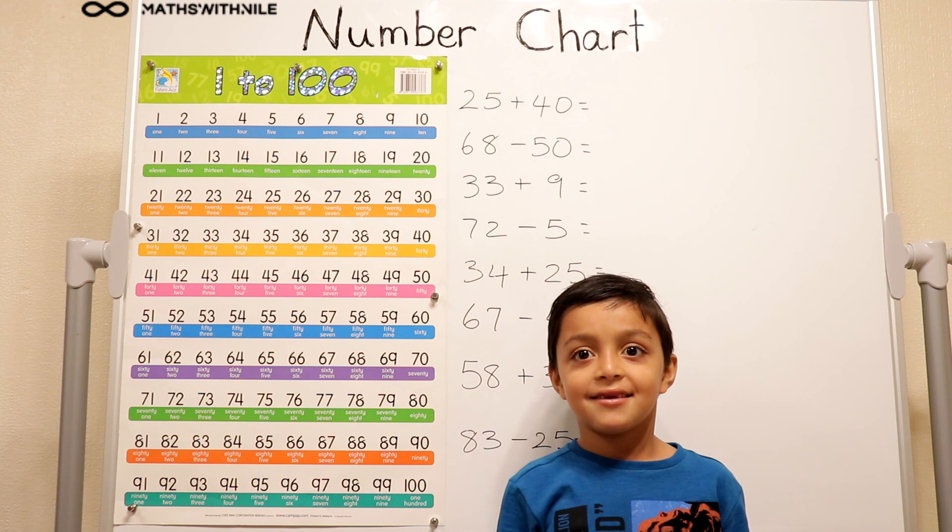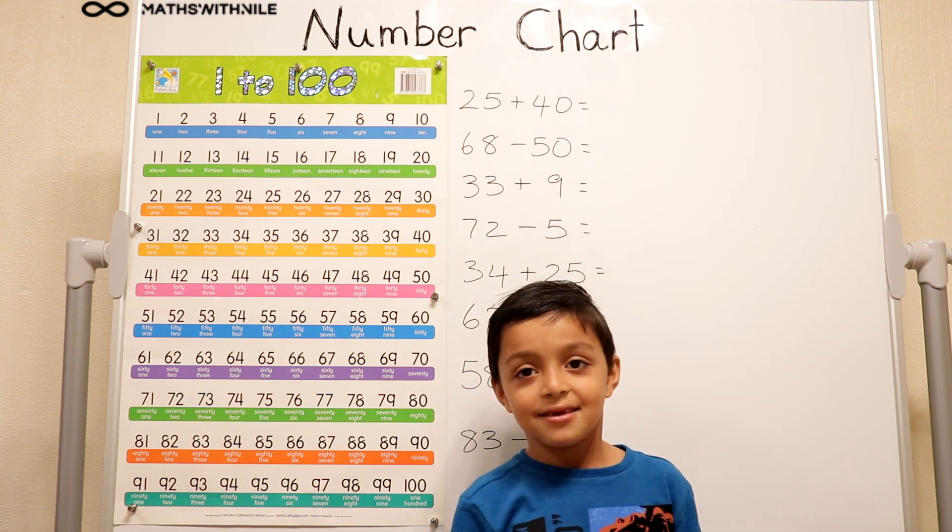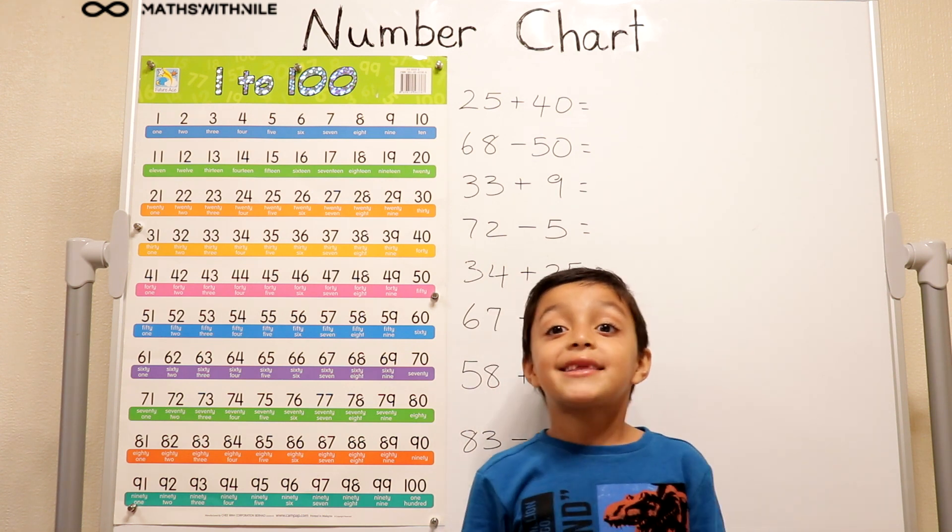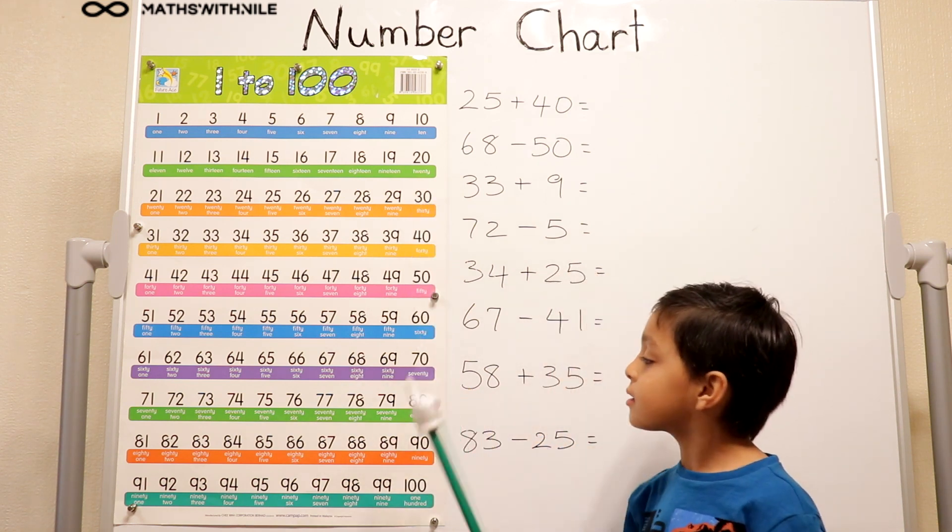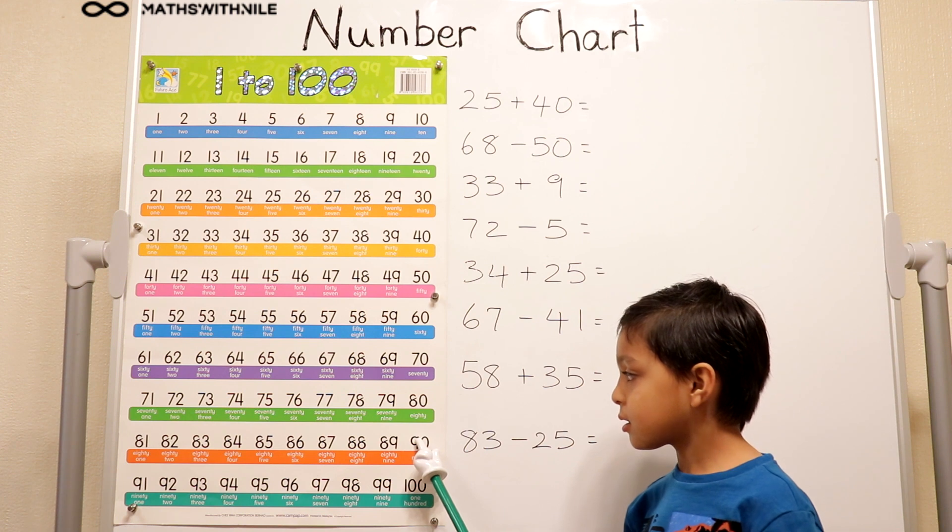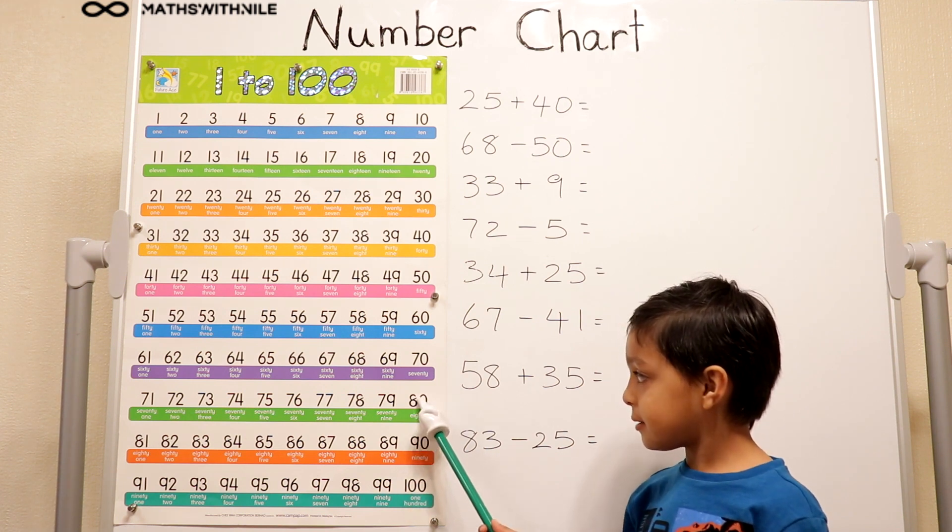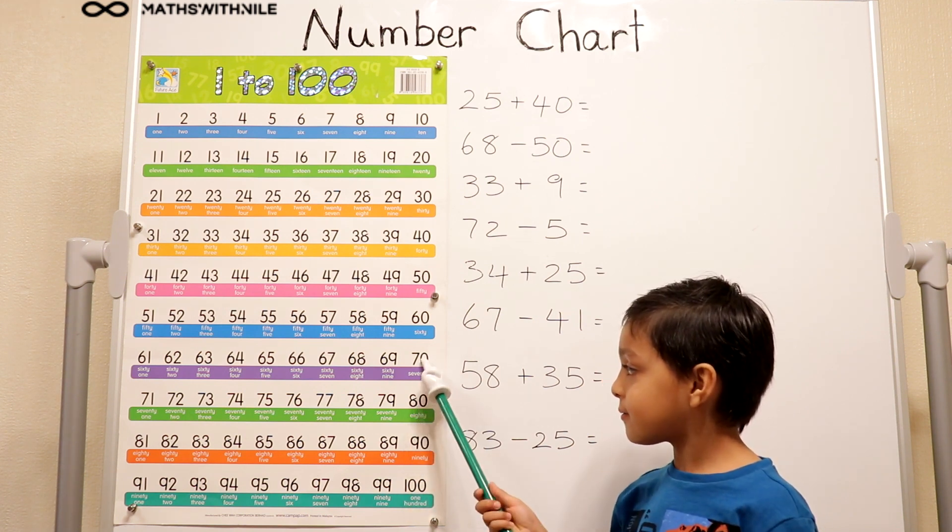So if we're adding 10 when we go down what do you think would happen if we go up one step? We take away 10. We take away 10. So let's start at 90. And what's 90 take away 10? 80. 80 take away 10. 70. Very good.